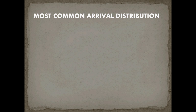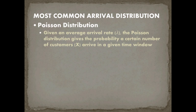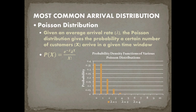The most common arrival distribution is the Poisson distribution. With an average arrival rate displayed by the symbol lambda, it gives us the probability that a certain number of customers x arrive in a given time window. Mathematically, the probability of x is e to the negative lambda, times lambda to the x, all divided by x factorial. For lambda equals one, the probability of zero customers is about 37%, one customer about 37%, two customers about 18%, three customers 6%, and so on — with a small but nonzero chance of eight, nine, or ten customers arriving.